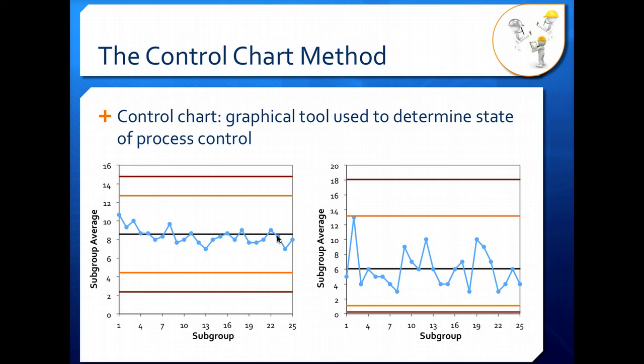Variables are things like temperature or pressure or weight. They are numerical measurements that basically have infinite variation in them. Attributes are more go-no-go things, so number of defects per sample, for example.